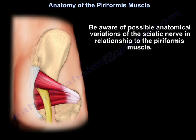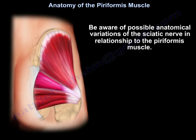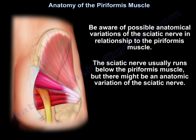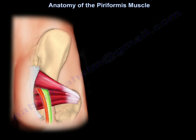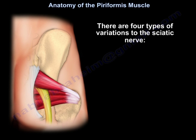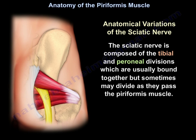Be aware of possible anatomical variations of the sciatic nerve in relationship to the Piriformis Muscle. The sciatic nerve usually runs below the Piriformis Muscle, but there may be an anatomical variation. There are four types of variations. The sciatic nerve is composed of the tibial and peroneal divisions, which are usually bound together but sometimes may divide as they pass the Piriformis Muscle.